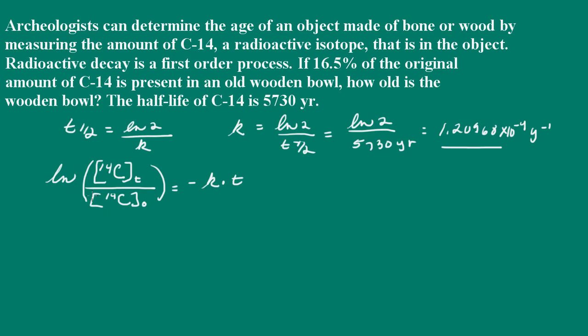So what we have is, after so many years, the amount of carbon-14 is 16.5%. And originally, there was 100%. So we can go ahead and fill this in. So here we have 16.5%. And the initial concentration was 100%. And that's equal to a negative k, 1.20968 times 10 to the negative 4, and then times t.